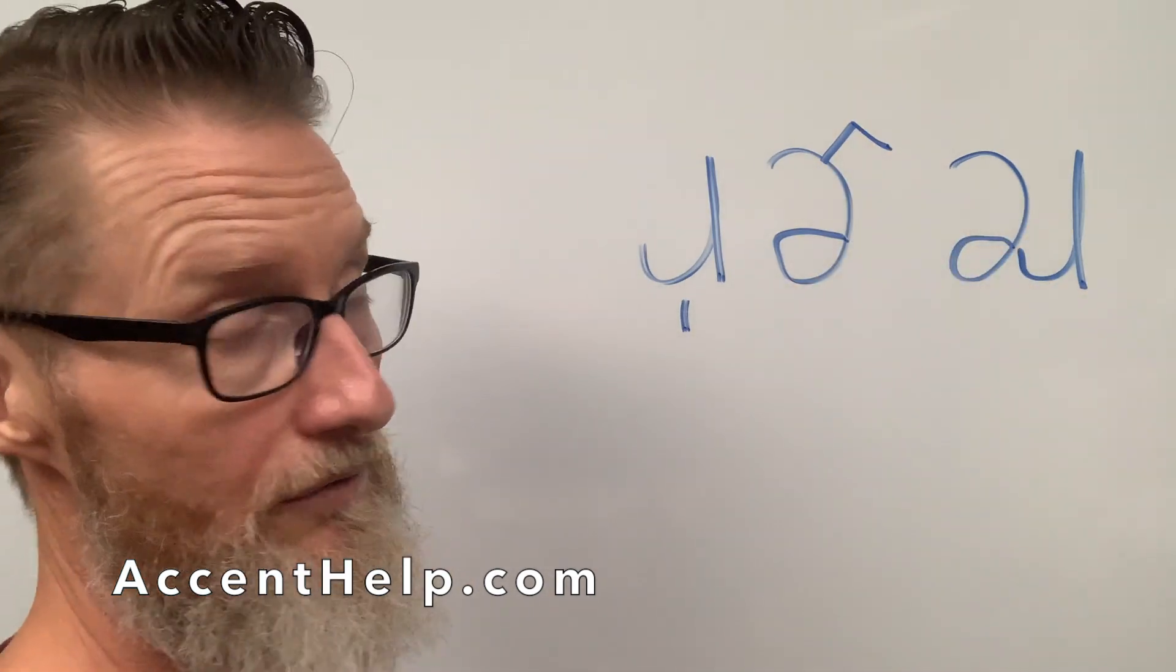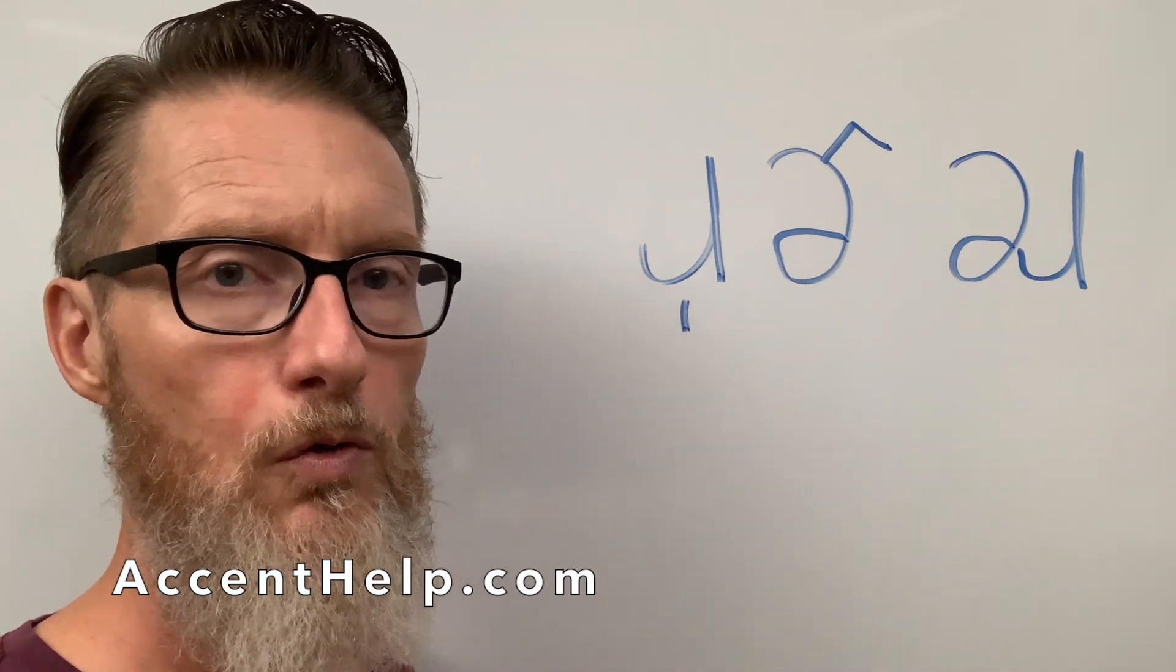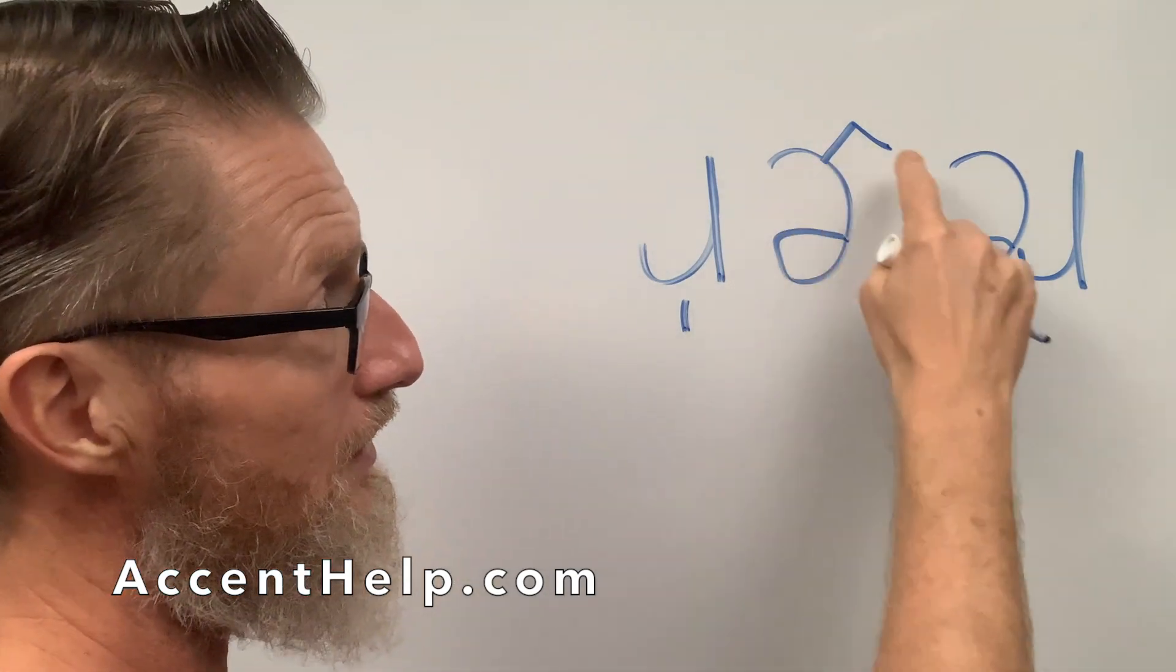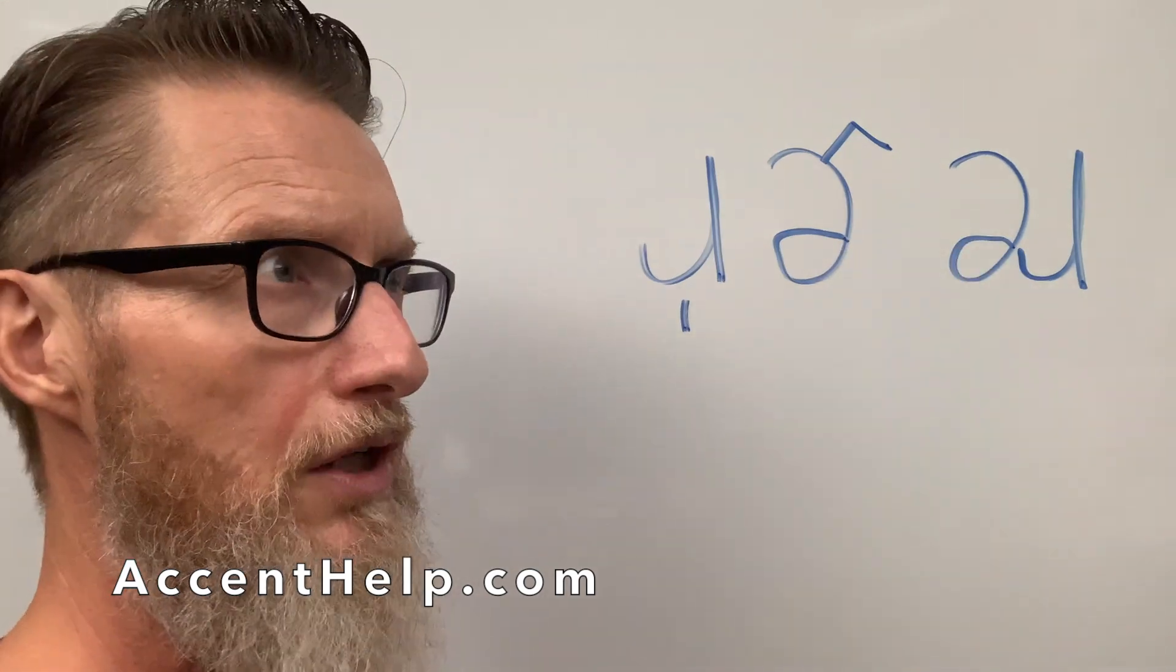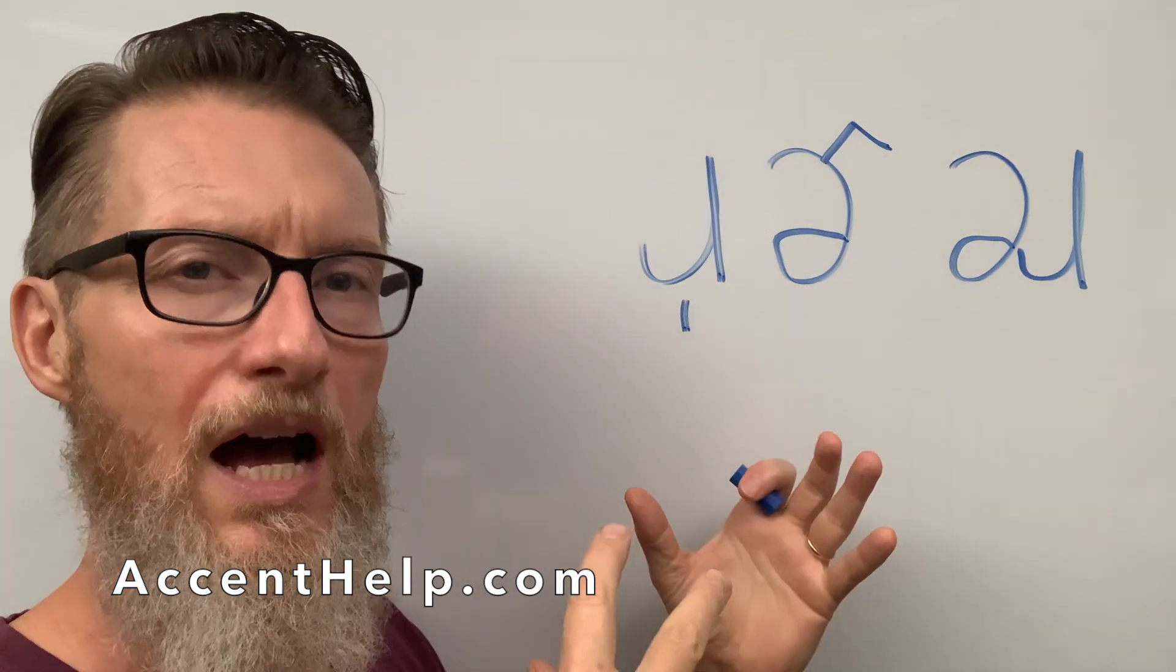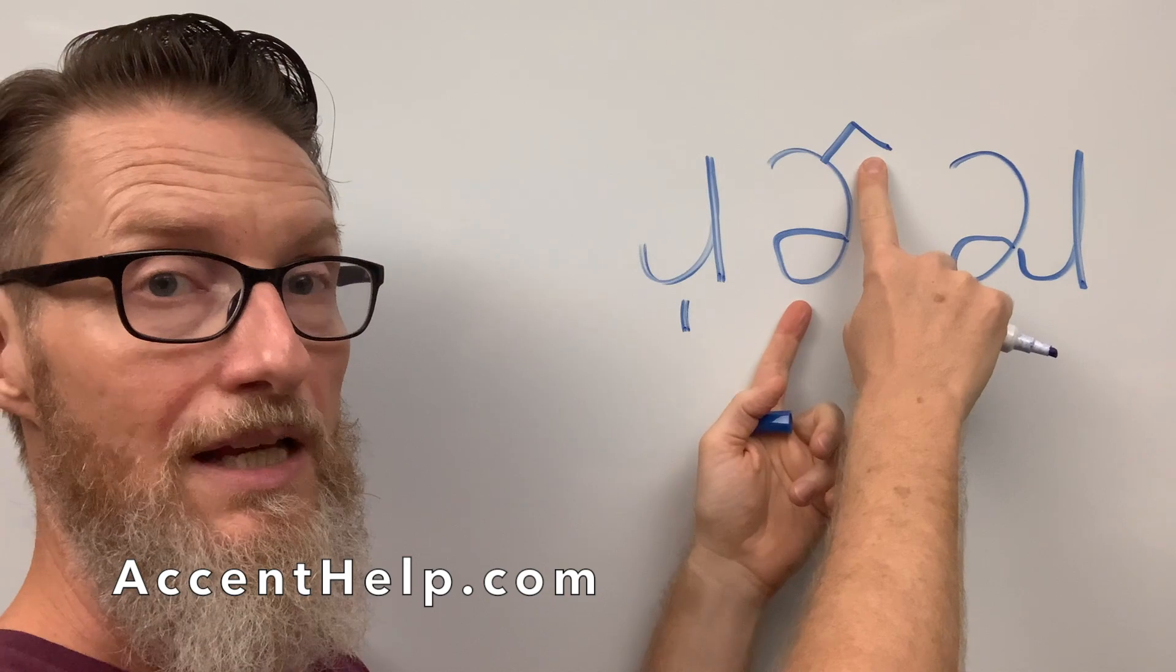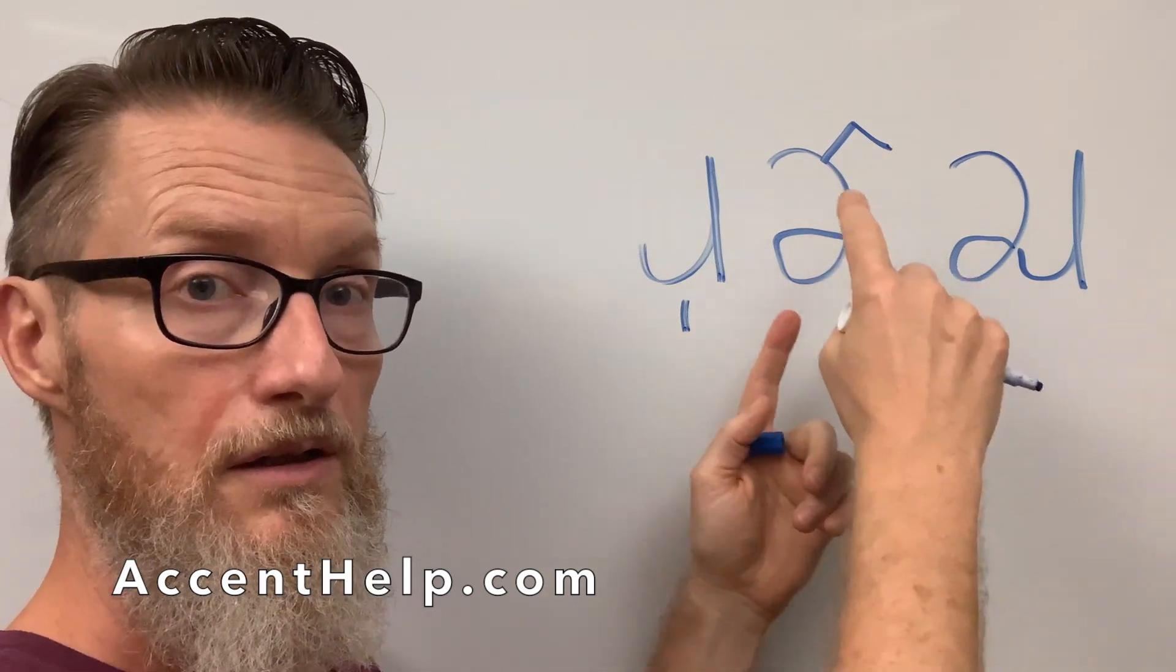This little wing-ding on there means roticity. There's an R quality. And so this little thing means that there's an R that is sort of a part of that schwa sound. So the uh sound with that becomes er, as in letter.